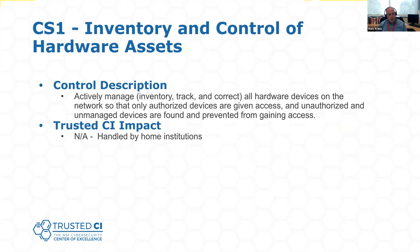Getting into the actual controls: Control 1 is inventory and control of hardware assets — actively managing and tracking all hardware devices on the network so only authorized devices get access and unauthorized or unmanaged devices are found and prevented from gaining access. For Trusted CI, this was handled by our home institutions, so we marked most of these NA, but we still had a good discussion around each one to make sure there wasn't something we should handle ourselves. If you're addressing this control, consider getting an actual asset management system rather than a spreadsheet.